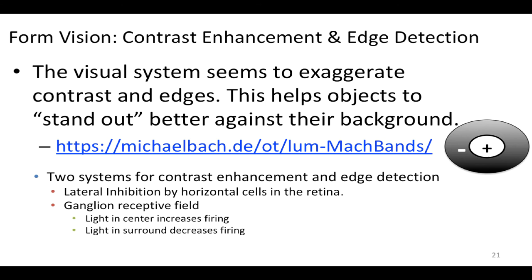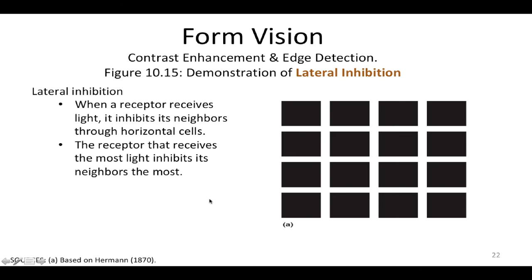It turns out there are actually two systems for contrast enhancement, and both are used in helping us detect the edges of objects. One is called lateral inhibition — a descriptive name. Lateral inhibition is performed by the horizontal cells inside the retina. Wherever there's a light area, it will inhibit neighboring areas. In this Hermann grid, you might see gray blobs at the surrounding intersections, but the moment you focus on any of those blobs, they tend to disappear — those blobs are just illusions.